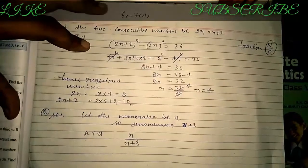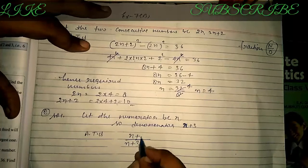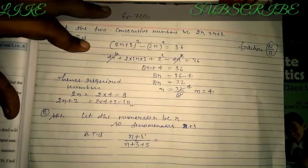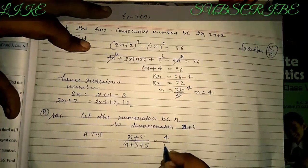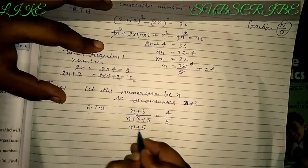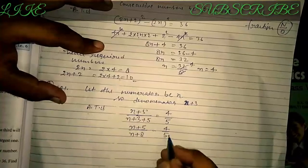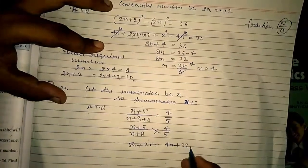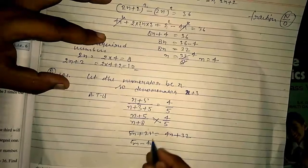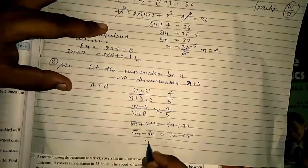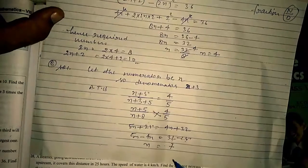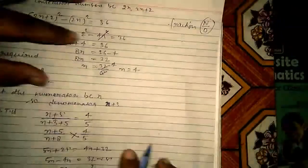If 5 is added to both parts — both part means numerator and denominator — the resulting fraction is equal to 4/5. So: (x + 5)/(x + 8) = 4/5. Cross multiply: 5x + 25 = 4x + 32, so 5x − 4x = 32 − 25, giving x = 7.